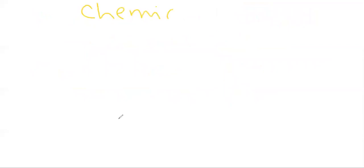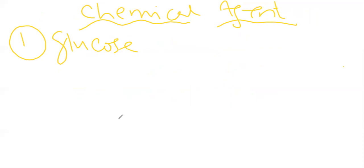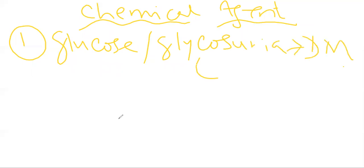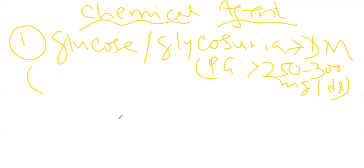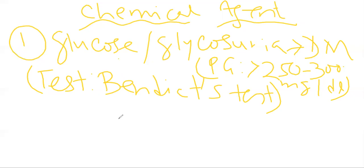Next we will discuss the abnormal chemical constituents. The chemical agents that can be present in the urine during pathological conditions — first is glucose. Presence of glucose, also known as glycosuria, can be seen in case of diabetes mellitus when plasma glucose value is more than 250 to 300 milligram per dl. How we can detect glucose in the urine? The test is known as Benedict's test, which can detect glucose in the urine.